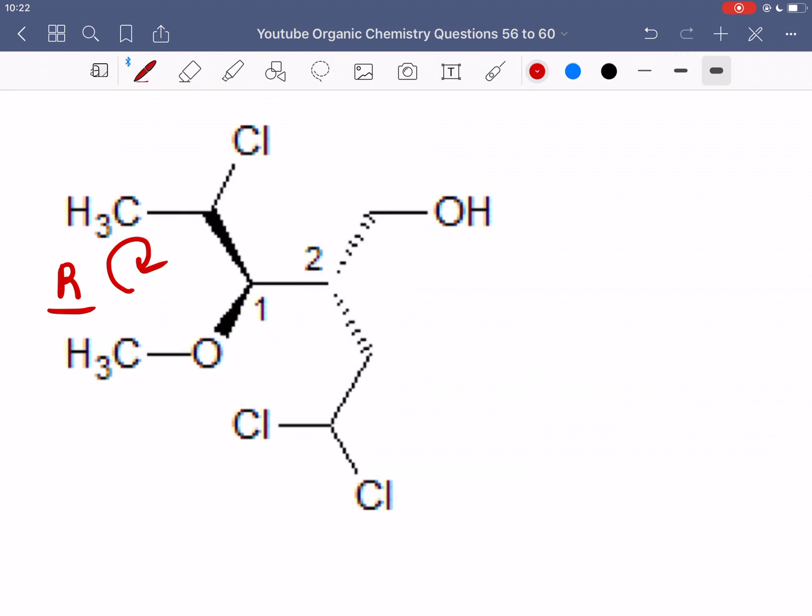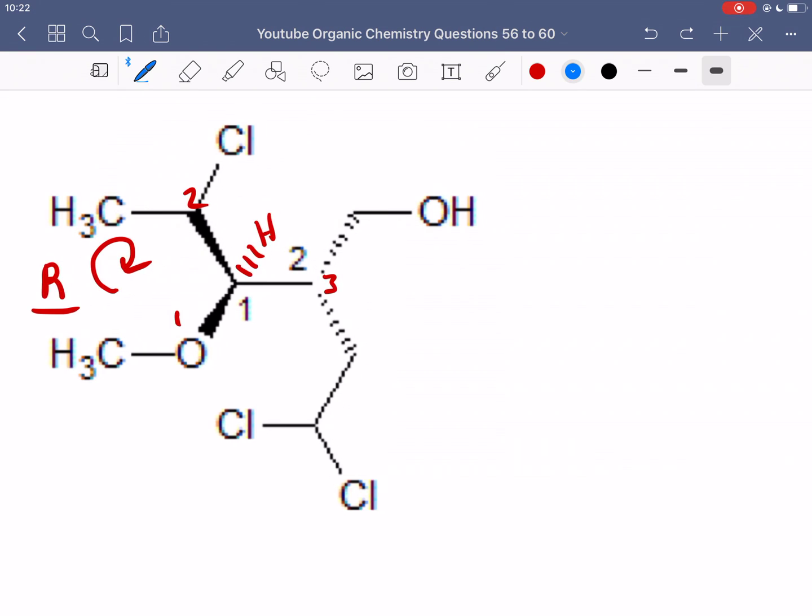Now let's do this for carbon 2, and we see that in carbon 2, we now have the hydrogen coming towards us. And the other groups are in the back, and this means that now whatever priority we get, we have to do the inverse of that, because we're not looking at it from the right direction with the lowest priority in the back. So we just need to find out the priority for this, or the orientation, and then flip it, and then that's the correct stereochemistry.